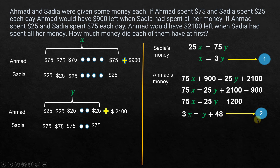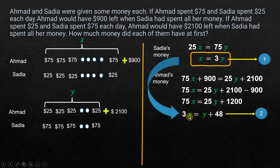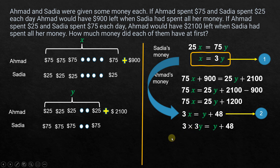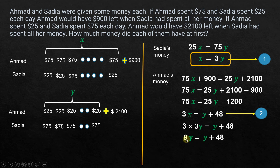From equation one we have X = 3Y. Substituting into the second equation: 3 times 3Y = Y + 48, which gives 9Y = Y + 48. Subtracting Y from both sides: 8Y = 48, so Y = 48 ÷ 8 = 6. Y equals 6 — that's the number of days Ahmed spent $25, or the number of days Sadia spent $75.